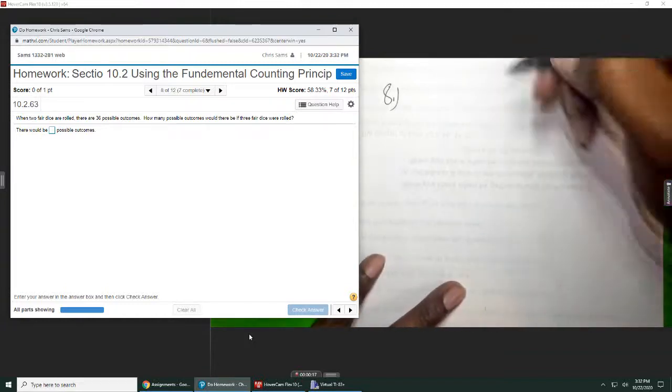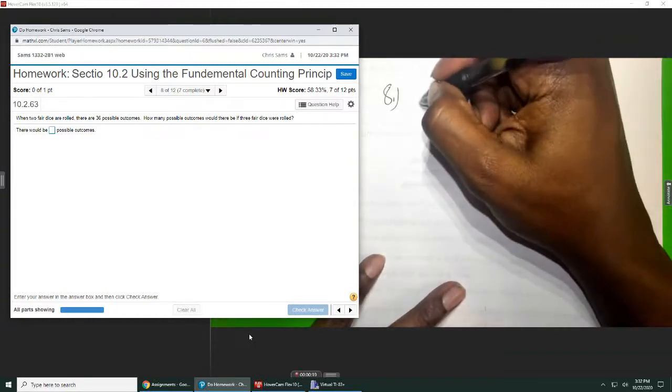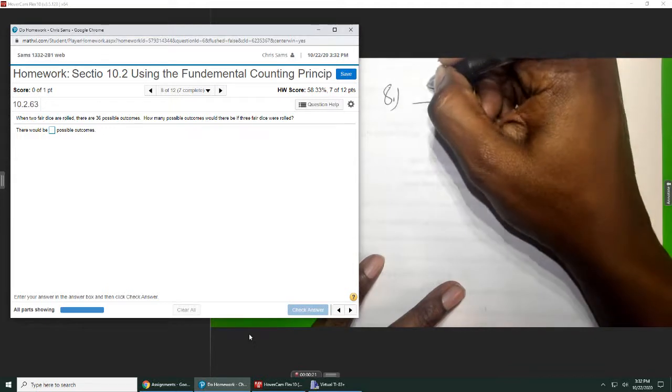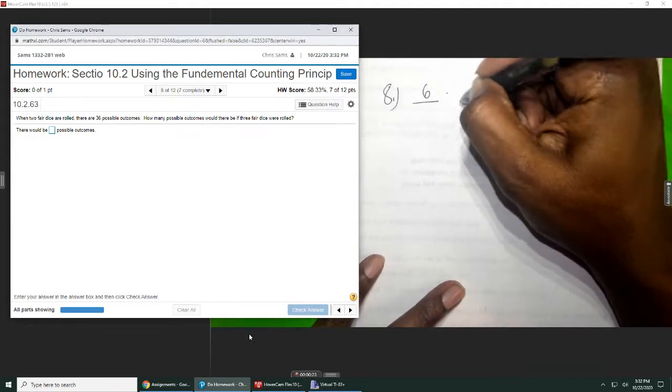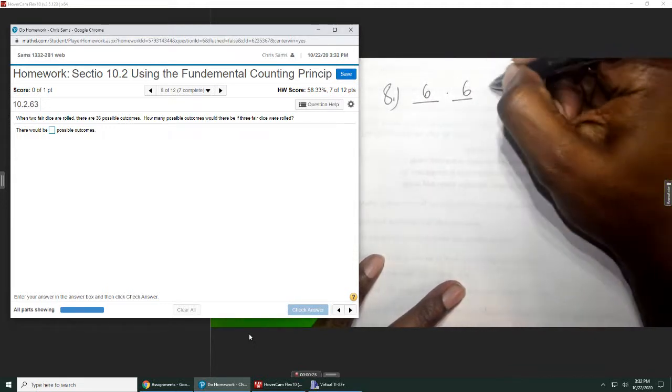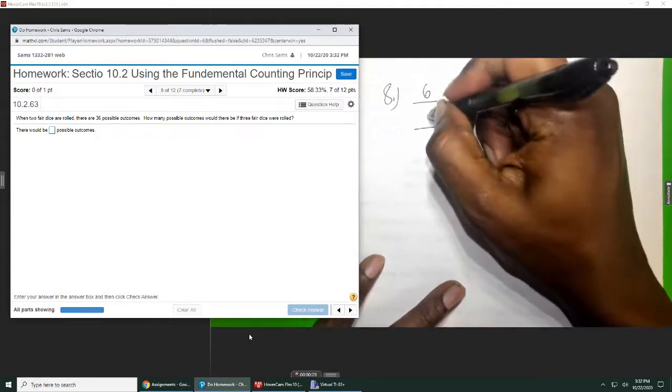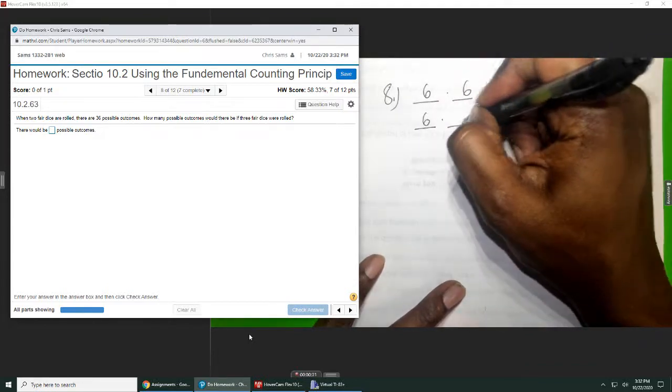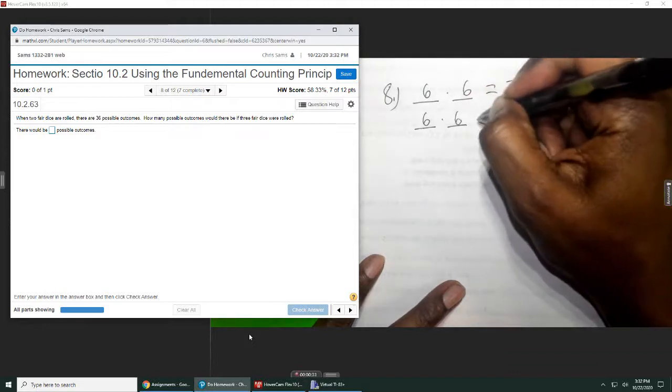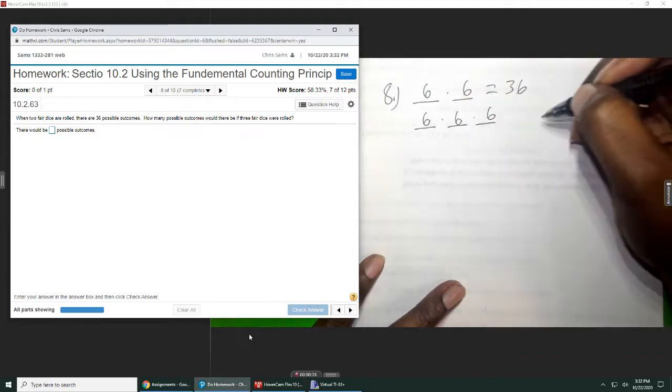Okay, so again, using the fundamental counting principle, a die has six sides. So if you roll two of them, six times six gives you 36. So now if we roll three of them, we would do six times itself three times. So six cubed,